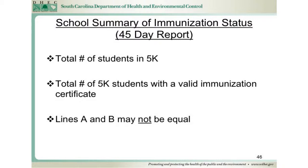The next section is to be completed by all schools that have students enrolled in 5-year kindergarten. On line A, enter the total number of students enrolled in your school's 5-year kindergarten. On line B, enter the number of 5K students who are enrolled with a valid immunization certificate. Lines A and B may not be equal.